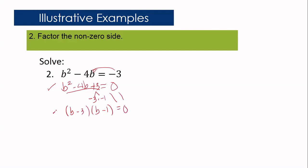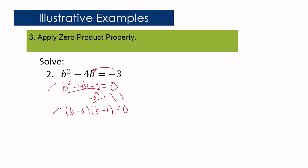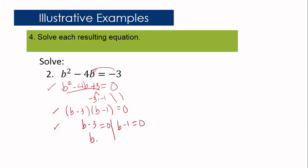Step 3: Apply zero product property. Equate each factor to zero: b minus 3 equals 0 and b minus 1 equals 0. Step 4: Solve each resulting equation using addition property of equality. b₁ equals 3 and b₂ equals 1. So the solutions are 3 and 1.